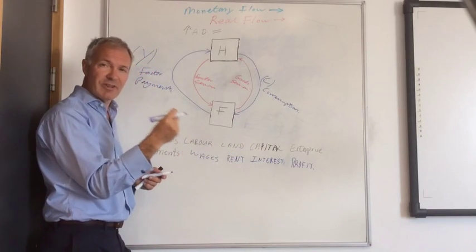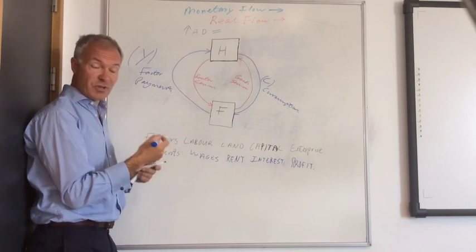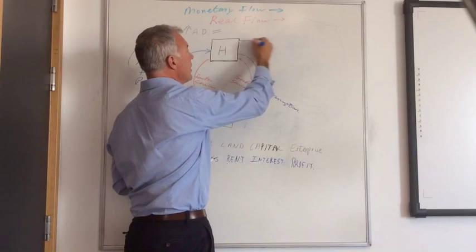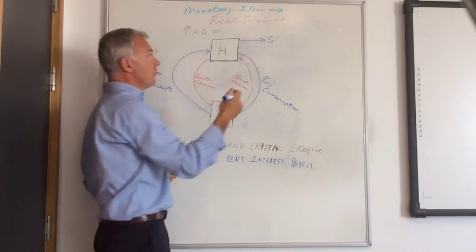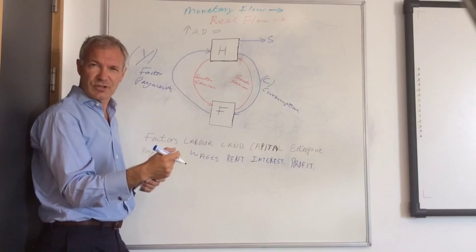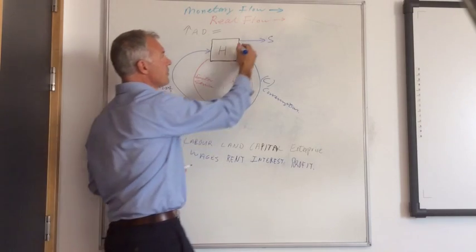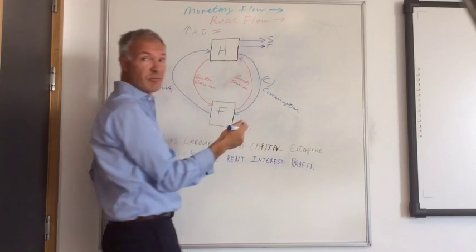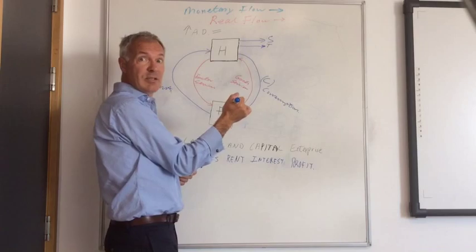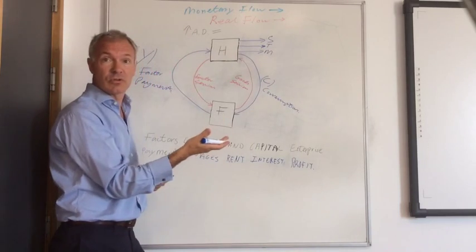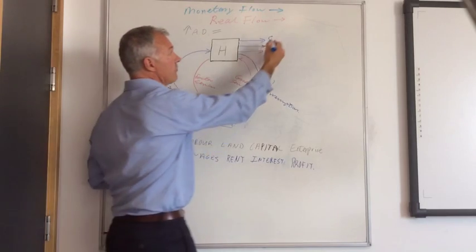There are a few other variables we need to consider. So sometimes households won't spend all their income. Indeed, they actually save some income. So we have saving, which is a withdrawal from the circular flow. And unfortunately for some, households also pay taxes. And taxes go to the government, of course, and that's another withdrawal from the circular flow. And indeed, people often like buying imports. So we also have imports as a withdrawal from the circular flow.